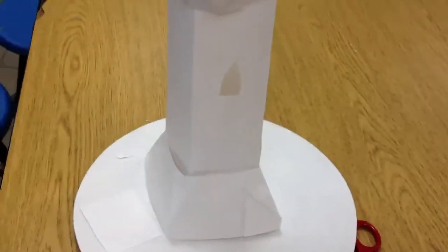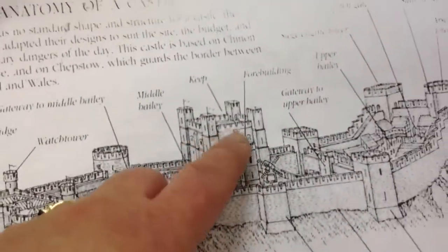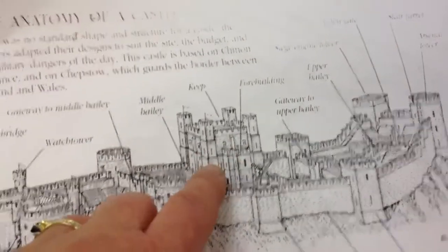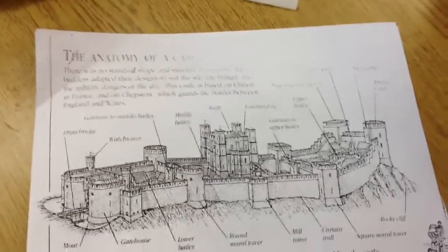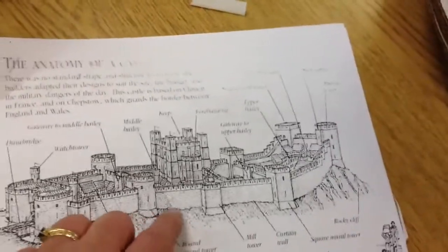So we're doing all these things to make a keep for our castle. This would be probably in the inner curtain inside here, where the royal family might stay to be farthest away from the invaders who are coming from the outside.